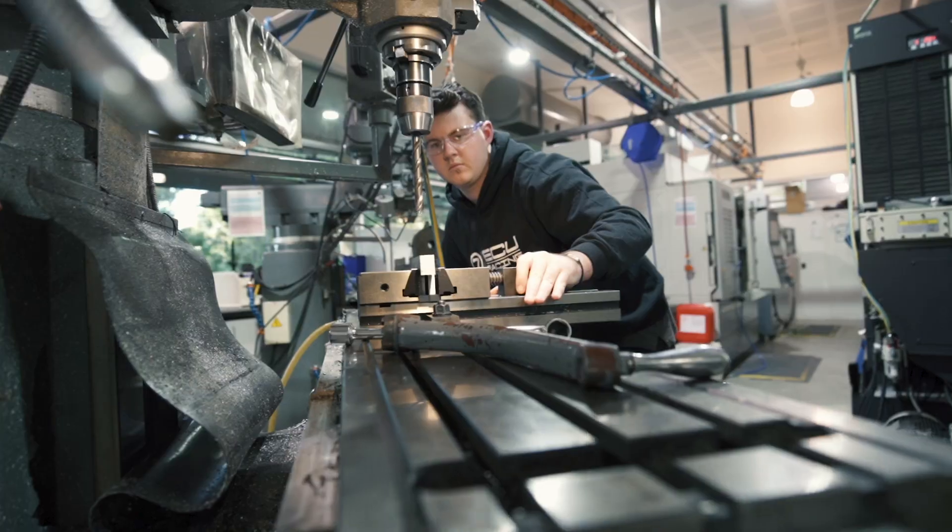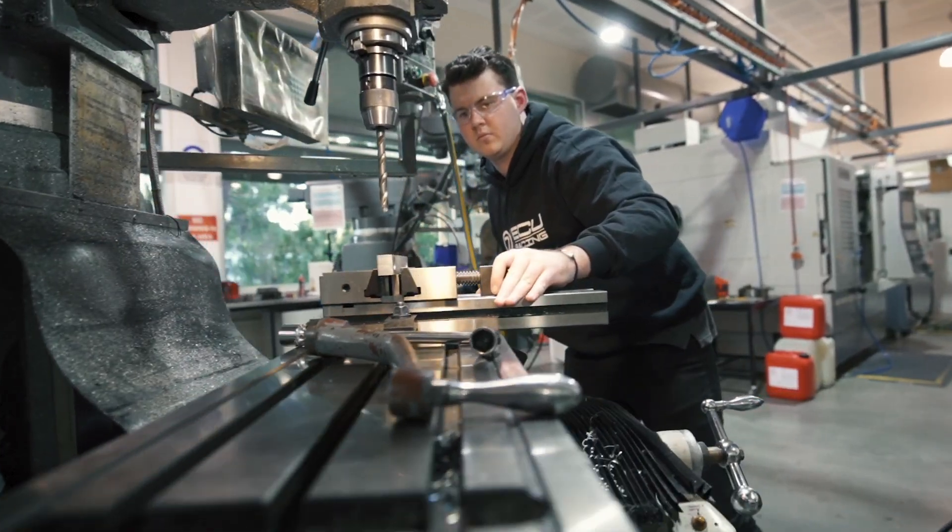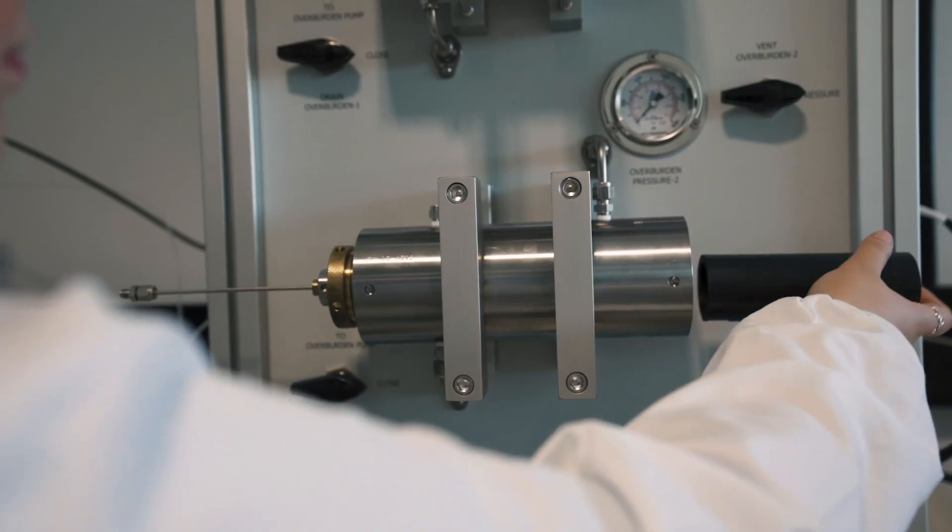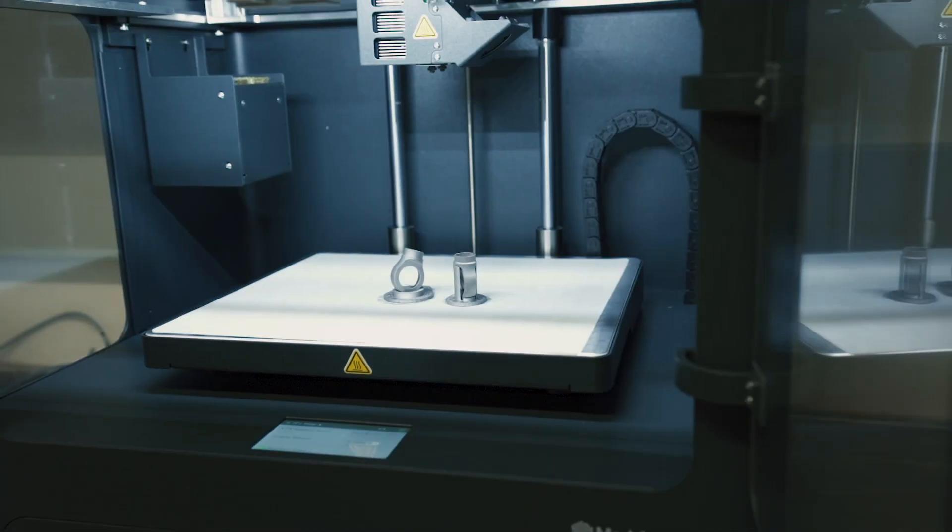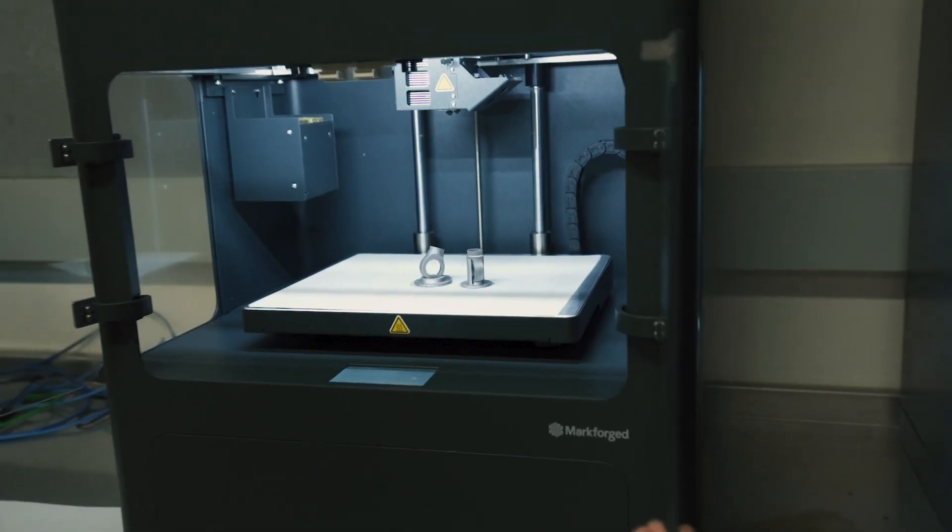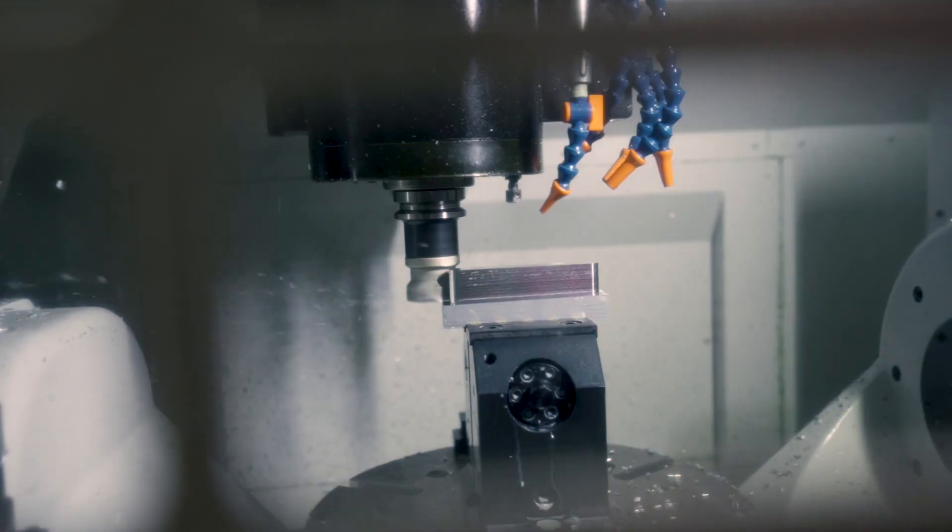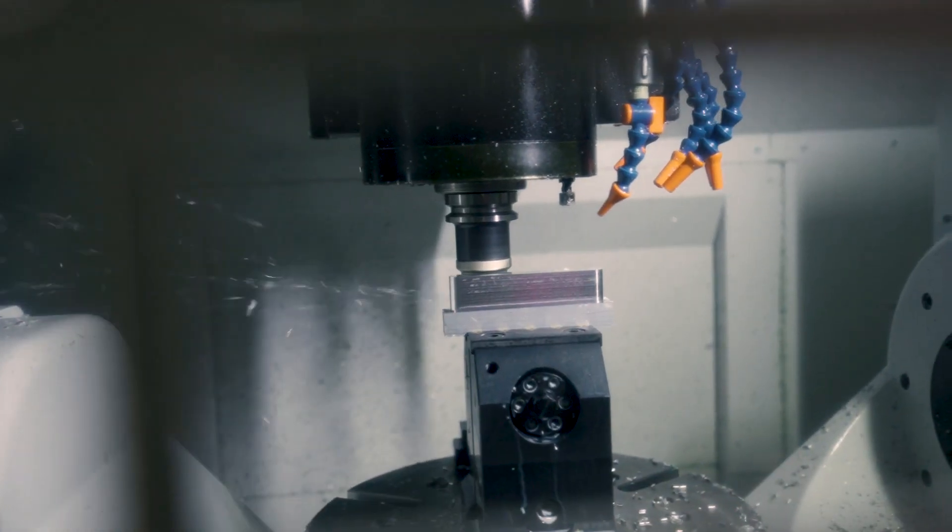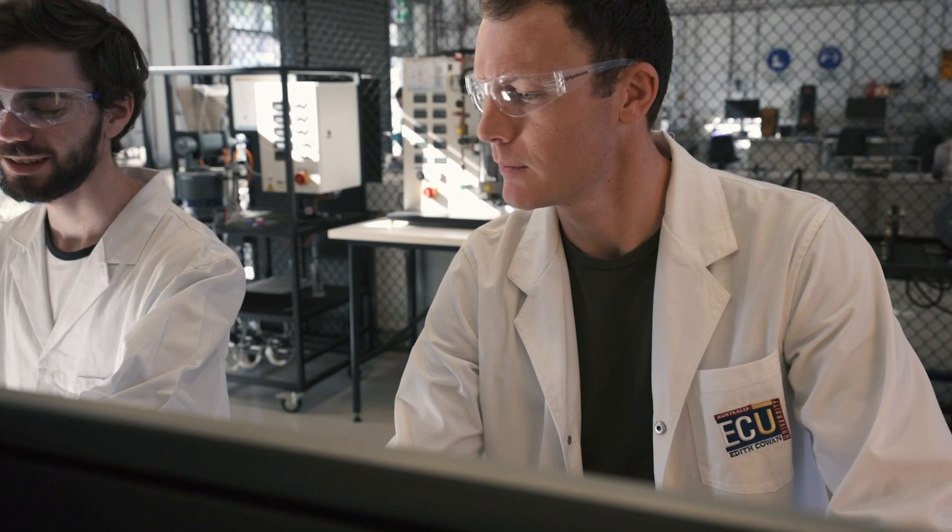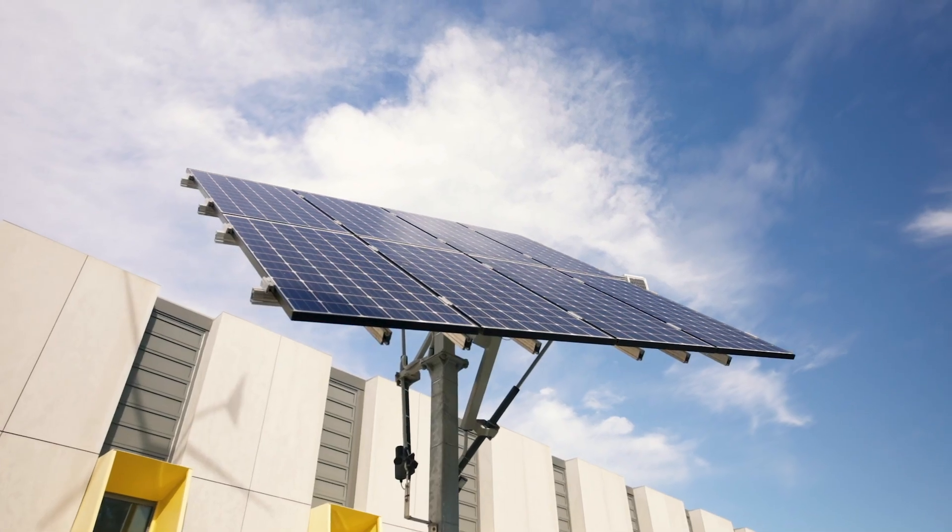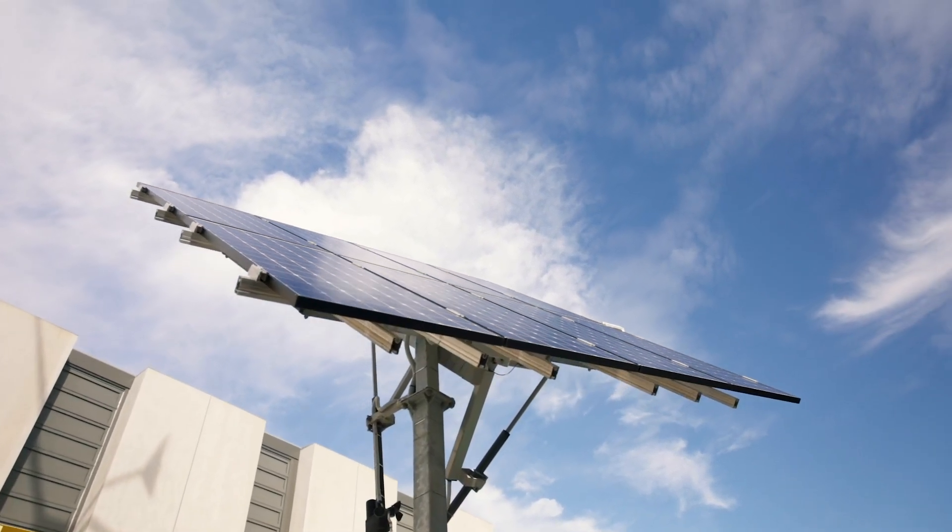At ECU you'll study in some of the best equipped industry-grade engineering labs in Australia featuring the latest technology such as cutting-edge metal and polymer 3D printers, building scale structural testing equipment, advanced manufacturing materials testing facilities, environmental remediation technologies, smart and renewable energy systems and much more.